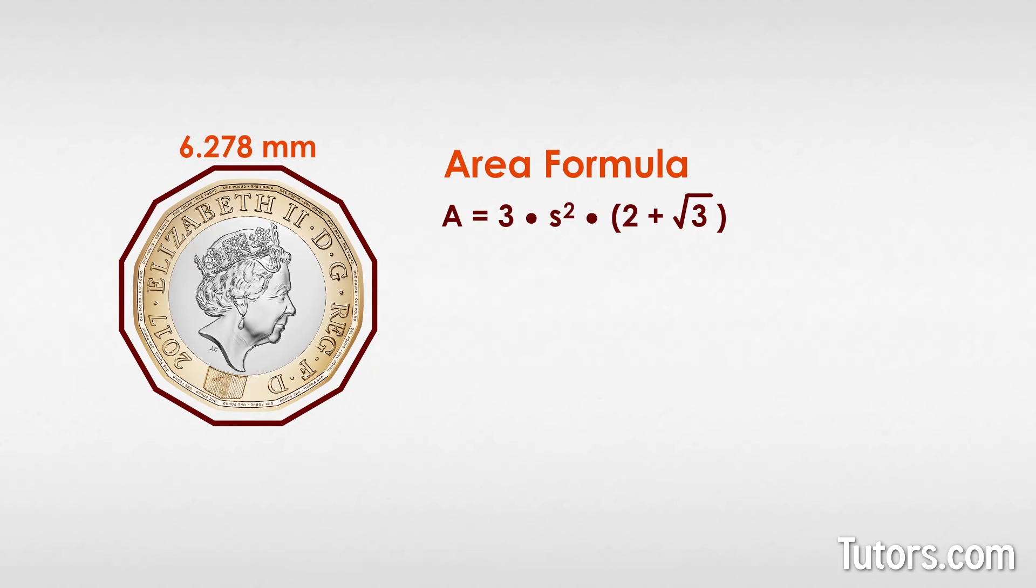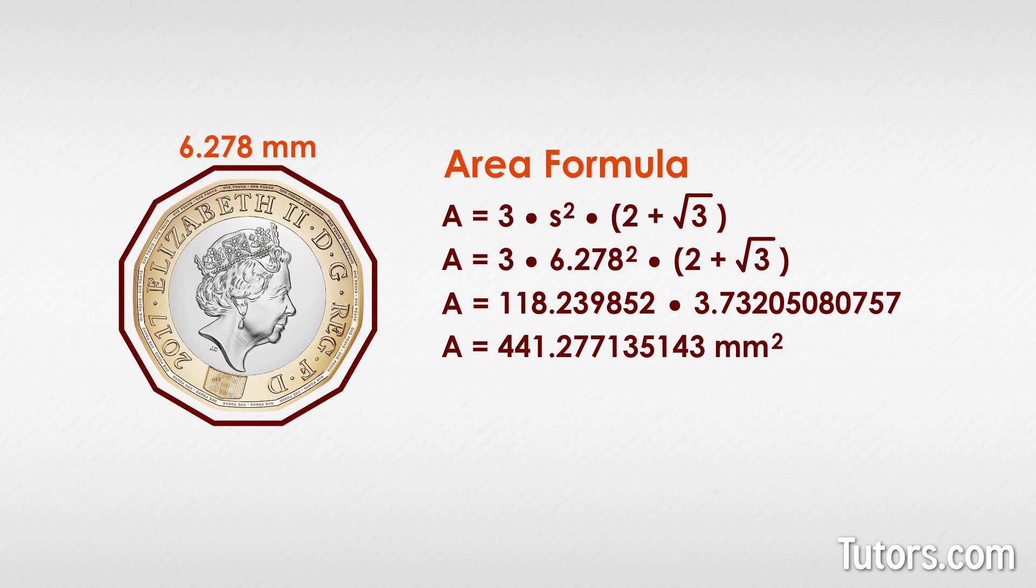To start, we plug our measurements into our formula: a equals 3 times 6.278 squared times (2 plus the square root of 3). And now we solve for a. Our answer is a equals 4.41277 centimeters squared. You can round your answer if you wish.